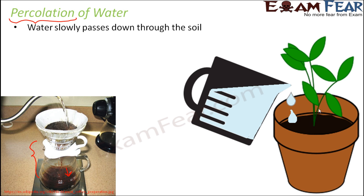What happens is that soil is made up of soil particles with spaces between them, and water tends to move through those spaces and go down deeper. That is why after some time we do not see any water on the surface. This process of water getting filtered through the spaces between the soil particles is known as percolation of water through the soil.